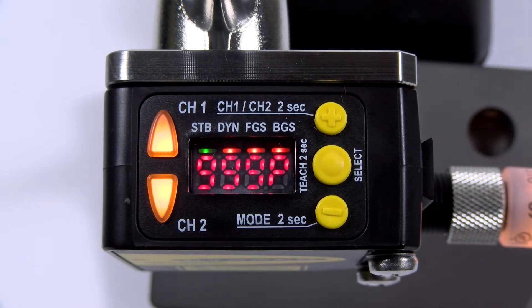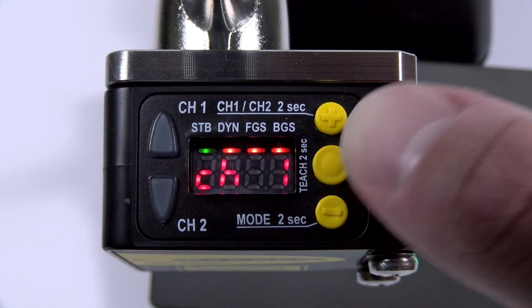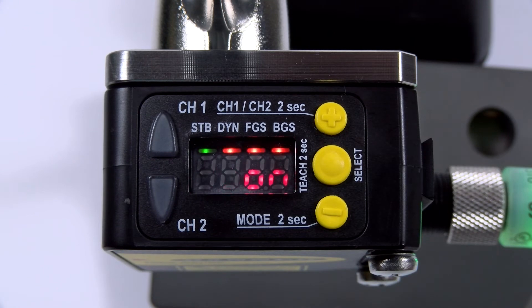To teach the sensor, present a static reference point that the sensor will be pointed towards at all times. The reference point does not have to be within the sensor's range. Press and hold the middle button for more than two seconds and you'll see set displayed on the screen. Press the middle button again to teach the sensor.